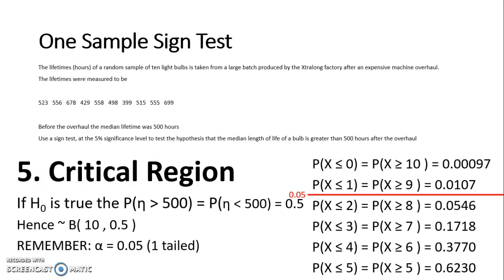It's discrete, so it's either going to be less than or equal to 1 or less than or equal to 2. My critical region is anything that is less than or equal to 1, less than or equal to 0, and then the same, greater than or equal to 9 and greater than or equal to 10. Because this is a greater than question, because we are looking for the length of life of a bulb being greater than 500 hours, and I'm looking at the greater than probabilities, my critical region is greater than or equal to 9.